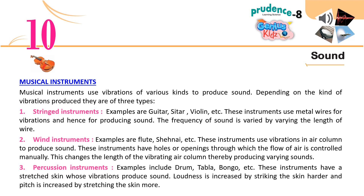The frequency of sound is varied by varying the length of wire. Two: Wind instruments. Examples are flute, shahnai, etc. These instruments use vibrations in an air column to produce sound. They have holes or openings through which the flow of air is controlled manually, changing the length of the vibrating air column to produce varying sounds.